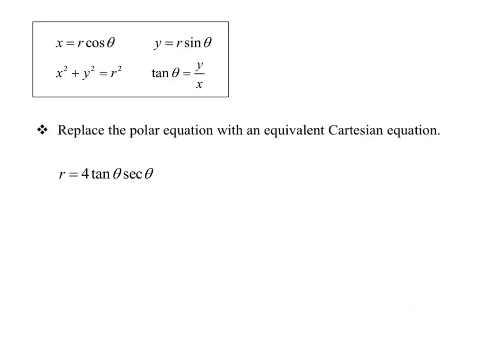Recall that we have these four basic identities for switching between polar and Cartesian: x equals r cosine theta, y equals r sine theta, x squared plus y squared equals r squared, and tangent of theta equals y over x. We want to use these four equations, as appropriate, to switch from r and theta to x and y, or vice versa.